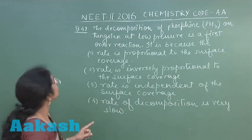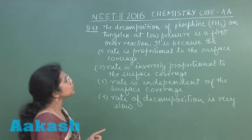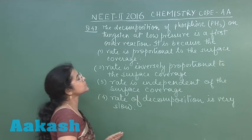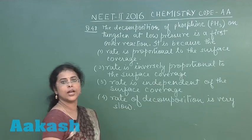Moving to the next question, question number 48. The decomposition of phosphine on tungsten at low pressure is a first order reaction.